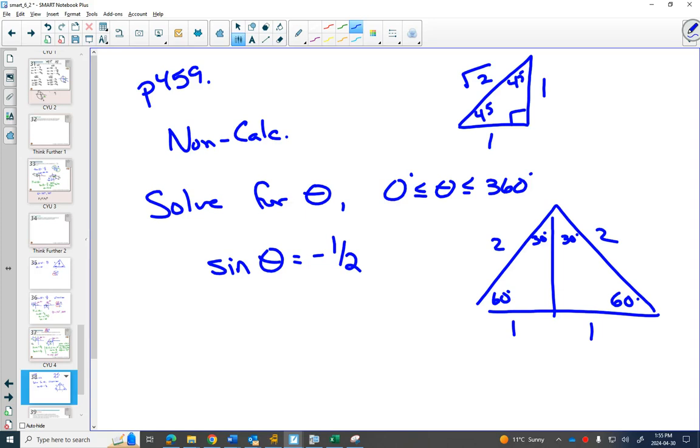On a non-calculator question like this, you would have to look at your special triangle and see, is the opposite over hypotenuse, because that's what sine is, ever 1 over 2 in one of those angles? Here, I can get 1 over 2 in this one.